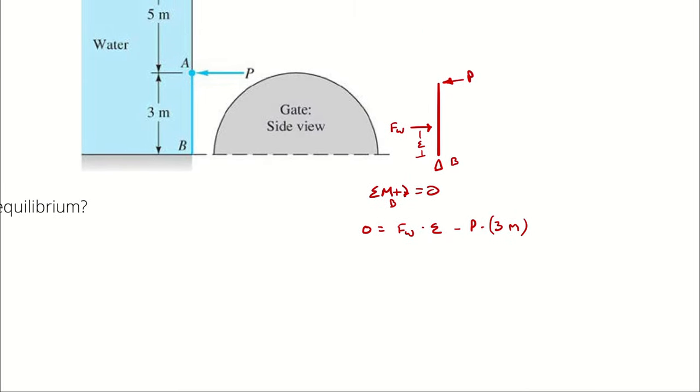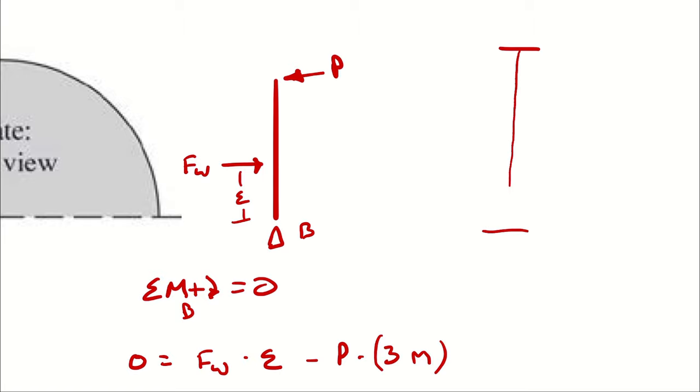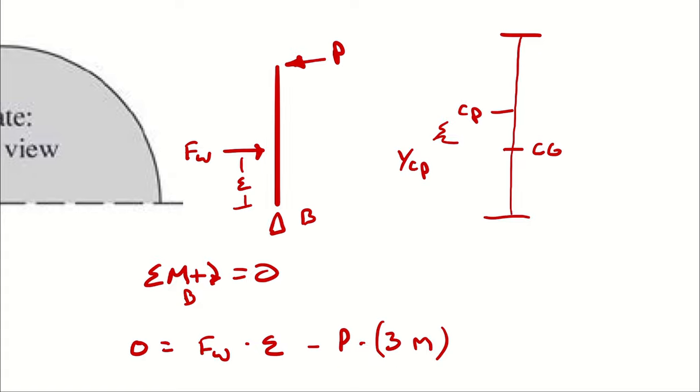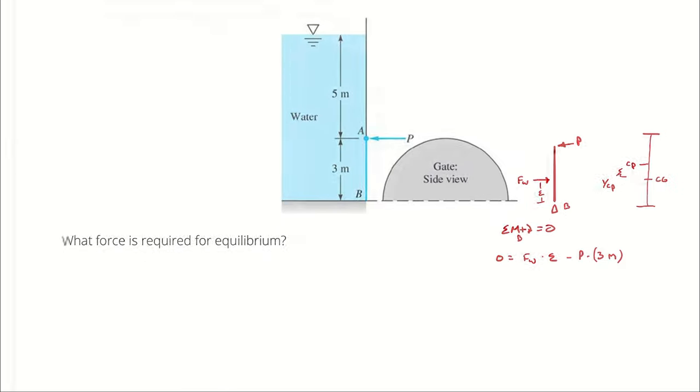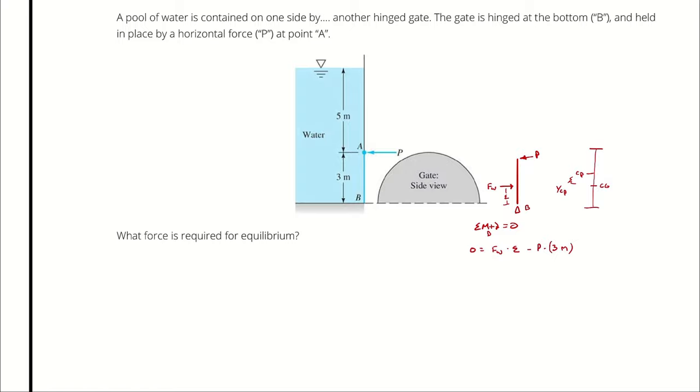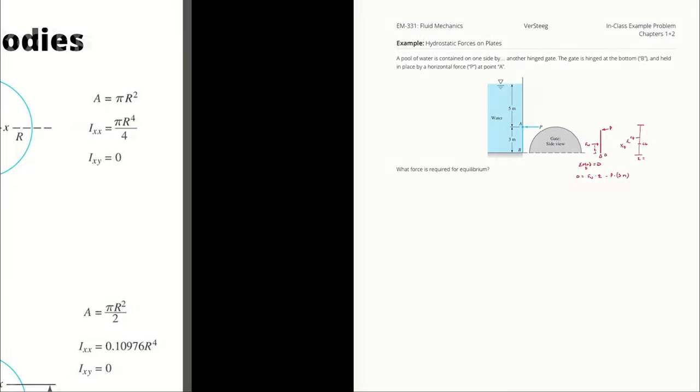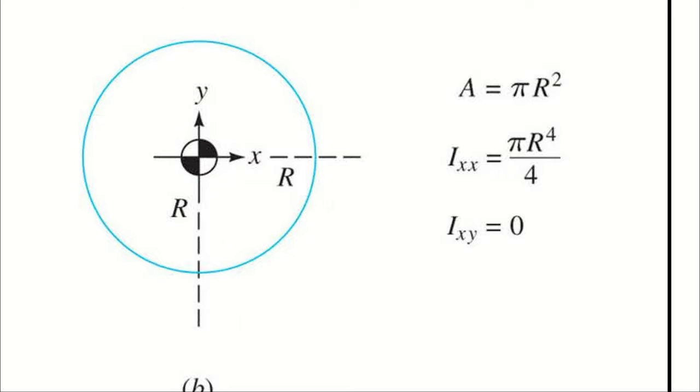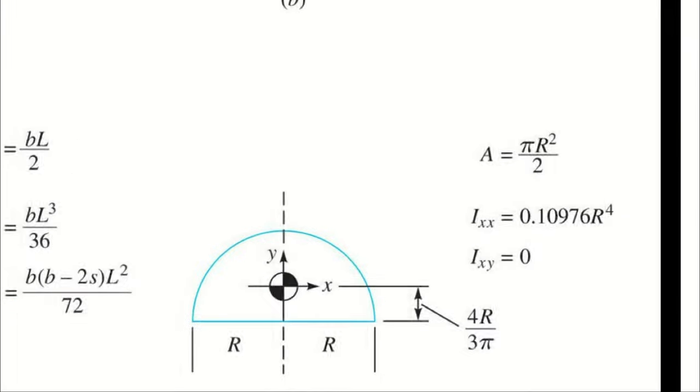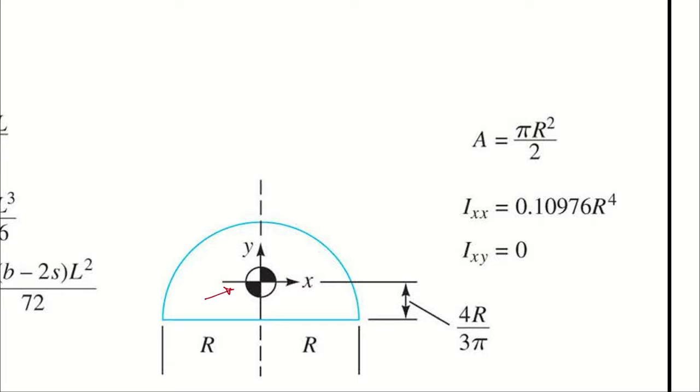And then like with the previous example, we end up in a situation where our center of applied force is defined relative to CG. And the distance between them is always defined up. It's YCP. Therefore, I can say epsilon is going to be the distance from the bottom of the gate to the center of gravity plus YCP. And for that information, let's refer back to our table. I know if I have a hemispherical gate, the distance to the centroid from the bottom is four times the radius divided by three times pi.